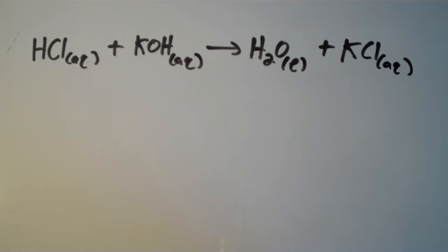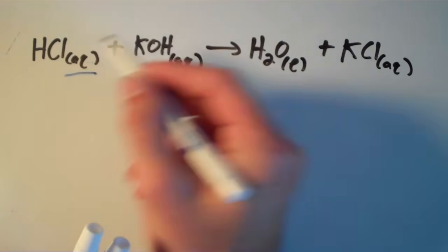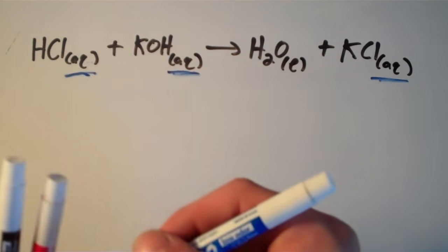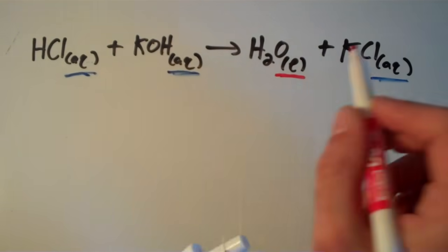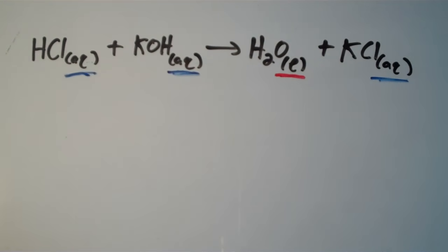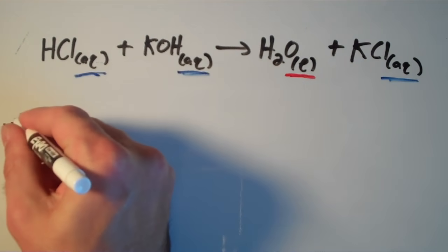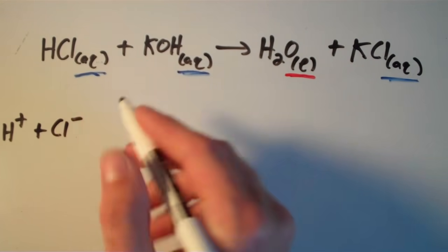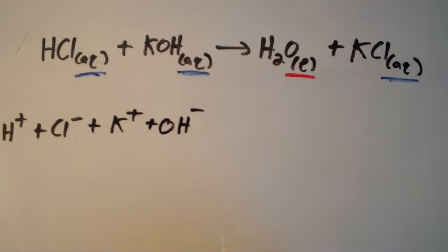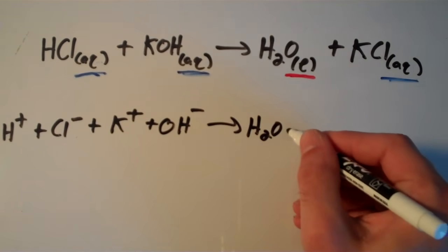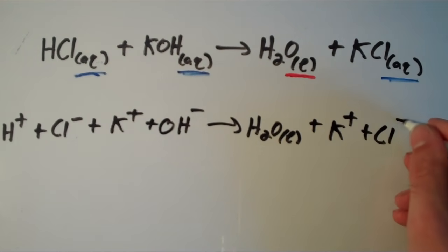When writing the complete ionic equation, we break up soluble ionic compounds into their constituent ions. HCl, KOH, and KCl are all aqueous. However, water is not a soluble ionic compound — it's just pure water, so we leave it alone and no ions come from it. The complete ionic equation is: H+ (aq) + Cl- (aq) + K+ (aq) + OH- (aq) yields H2O (l) + K+ (aq) + Cl- (aq). All the ions are aqueous.